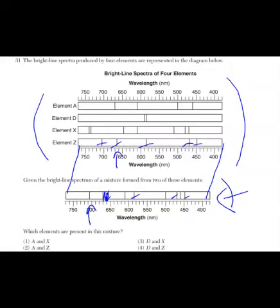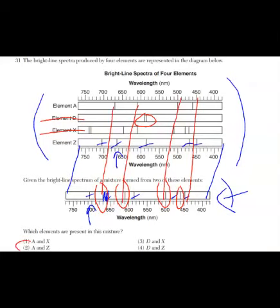Now, I'm making marks because the ones that are left are part of a different element. The first line is here. We have one there, one there, one there, and one there. That's left. So, four lines. Right away, it can't be element D. It only has two, and it really can't be element X either. It has to be element A, and those four lines are going to match up. It's a mixture of choice 2, A and Z.